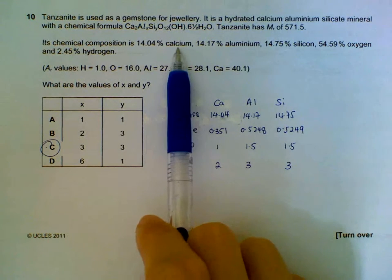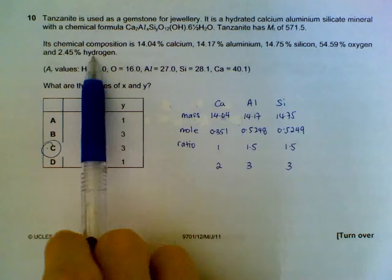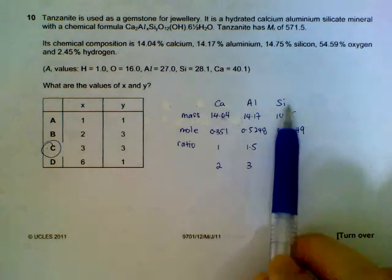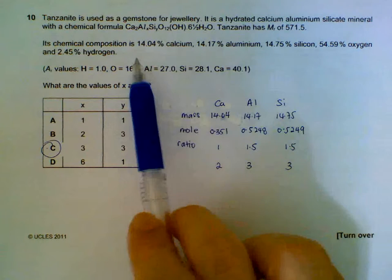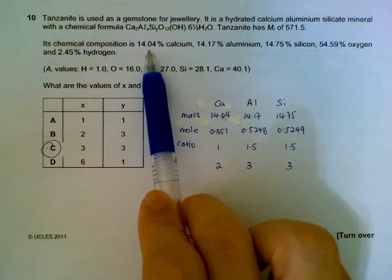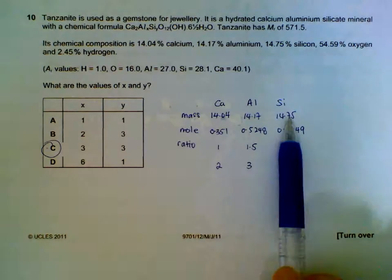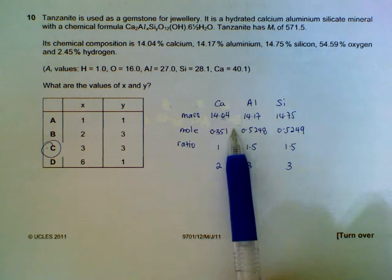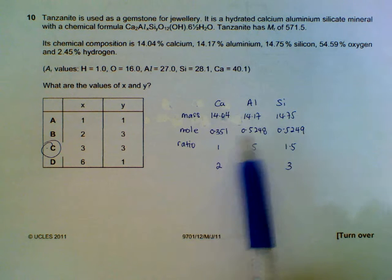In this case, I'll use calcium. Oxygen and hydrogen, I'll just leave it aside for the time being. So calcium, aluminium, silicon, I'll convert the number of percentages by mass into mass. This is using the empirical formula approach.